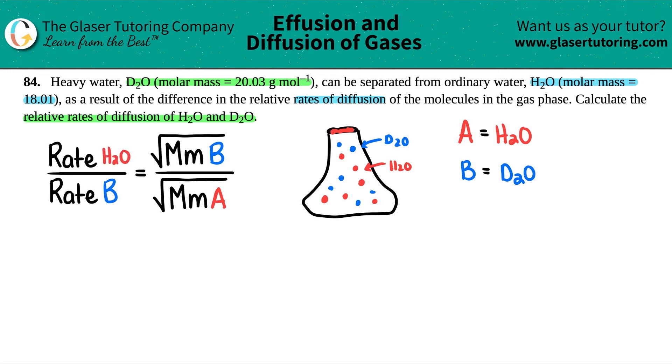divided by the rate of B, but we're now saying that that's D2O. And these rates are equal to the square root of MM. And MM stands for molar mass. And the tricky part of this is that they cross.